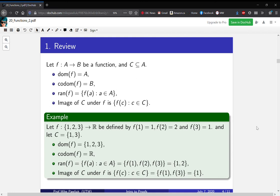The range is all possible outputs, so in that case it's {f(1), f(2), f(3)}, which is the set {1, 2}. Even though f(3) is also 1, we only represent things in sets once. And in this case, since C = {1, 3}, the image of C under f is the collection of all outputs when you input 1 and 3. Since f(1) = f(3), the image is just the set {1}.